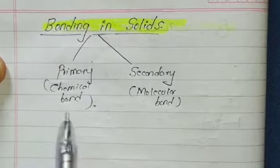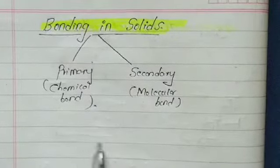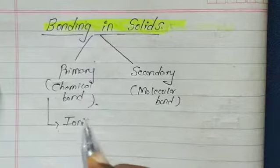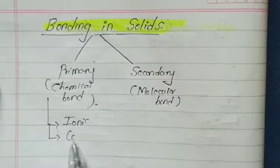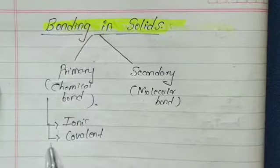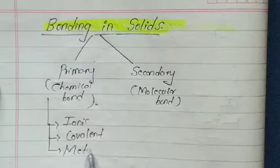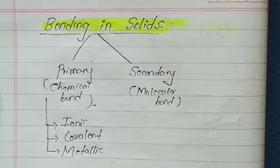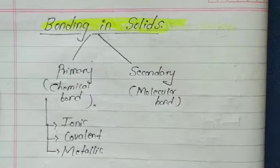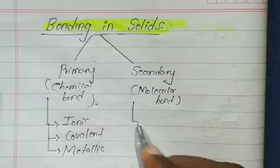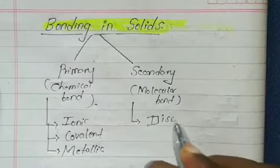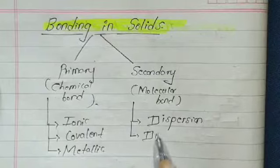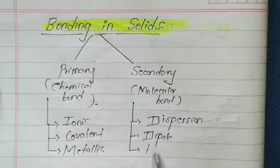Primary bonds include ionic bonds, covalent bonds, and metallic bonds. Secondary bonds, or molecular bonds, include the dispersion bond, dipole bond, and hydrogen bond.